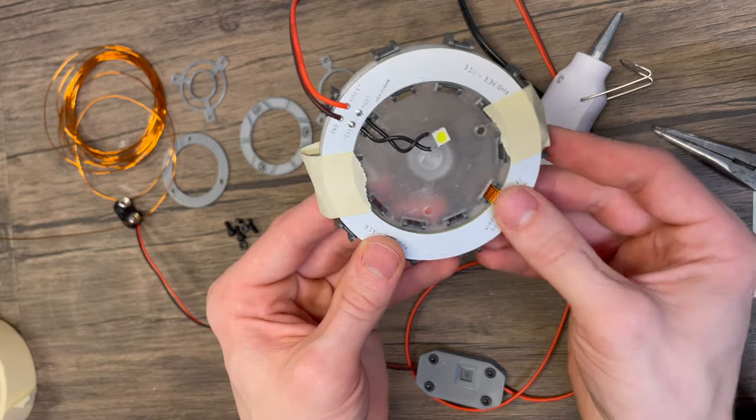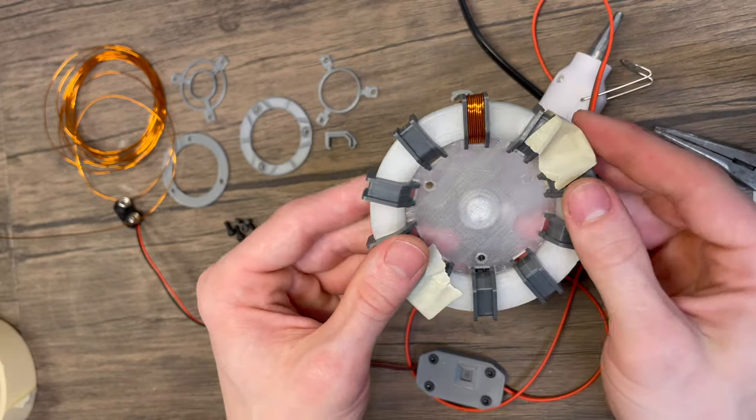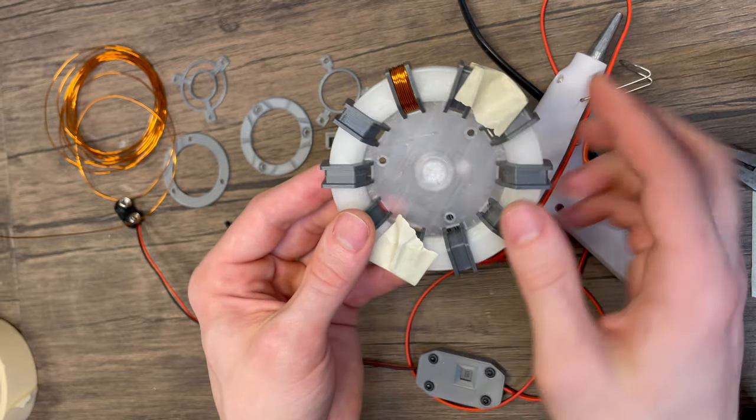And that completes our first coil. So it's nice and smooth. We notice that there's no overlaps and it looks just right. And we're gonna go ahead and continue that for the rest of the loops here.